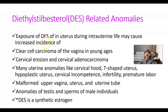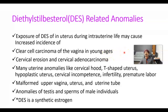Exposure to diethylstilbestrol in utero during intrauterine life may cause an increased incidence of clear cell carcinoma of the vagina, a type of adenocarcinoma. Women aged 16 to 22 years may develop clear cell carcinoma because they were exposed to DES while in their mother's uterus. Cervical ectropion and cervical adenocarcinoma are also possible.